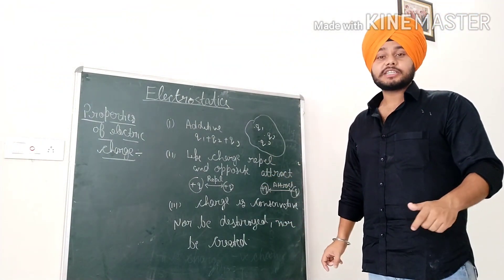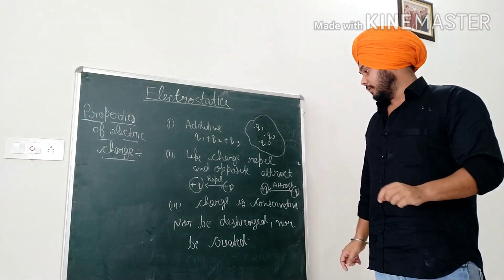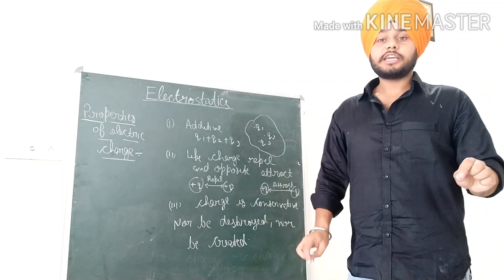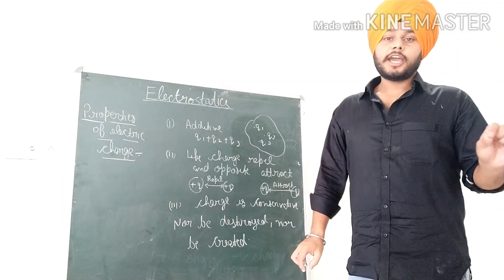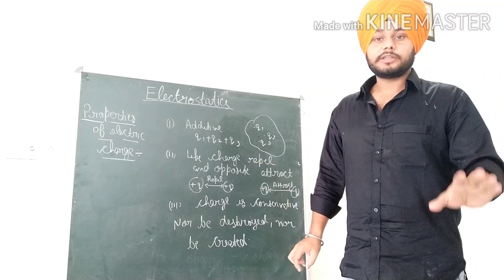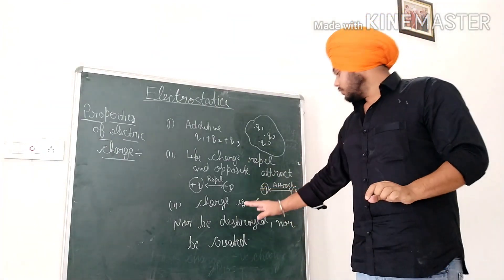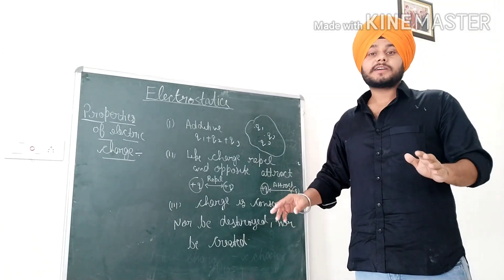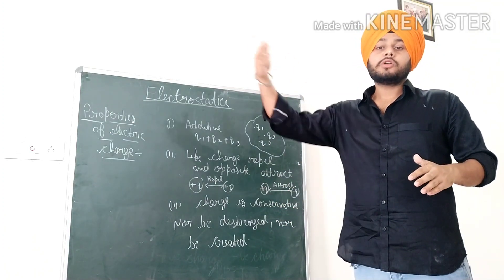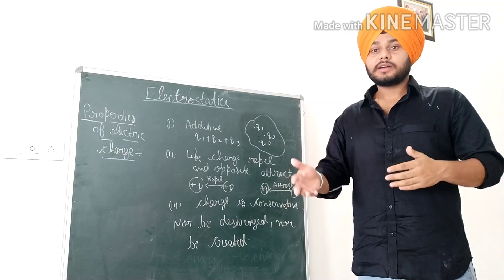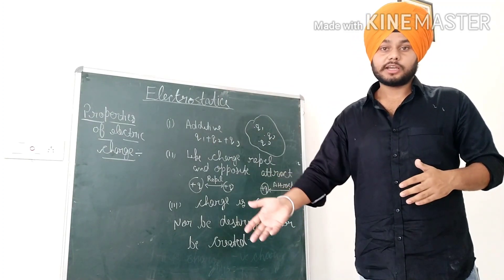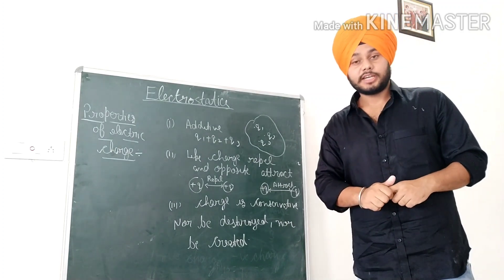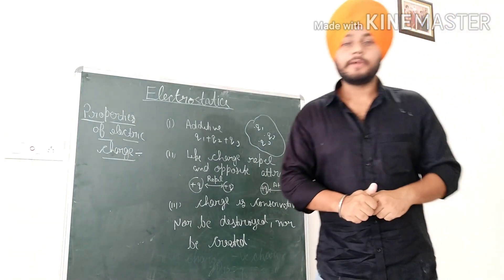The third property of charge is that charge is conservative. This means that charge, like energy, cannot be created or destroyed — it can only be converted from one form to another. Similarly, charge can be transferred from one body to another body. This is the conservation law of charge — a fundamental responsibility of nature.